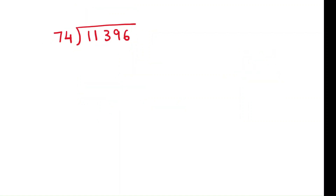Let's take another example: 11396 by 74. First, cross the last digit of the divisor and write it beside the quotient area. Now let's do the division with 7. 7 times 1 is 7.